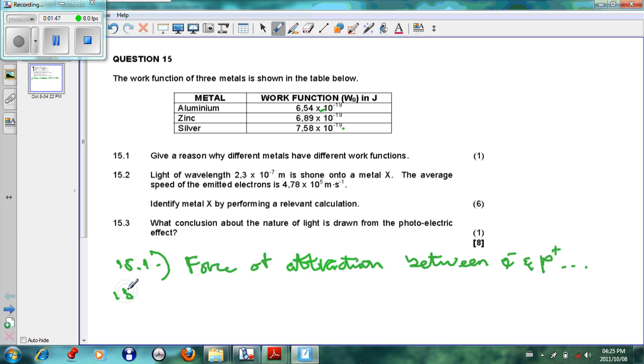Question 15.2: Light of wavelength 2.3 times 10 to the minus 7 meters is shown onto a metal x. The average speed of the emitted electron is 4.78 times 10 to the 5. Identify metal x by performing a relevant calculation.